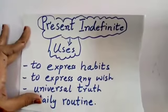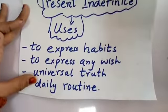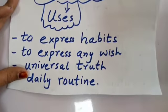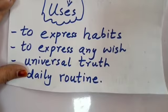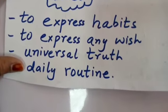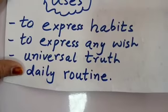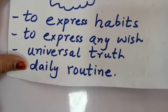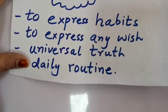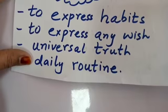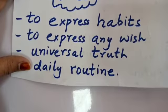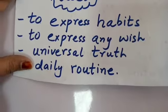The third use is to describe any universal truth — koi cheez jo hamesha se hoti aayi hai aur hamesha hoti rahegi. For example, the sun rises in the east and sets in the west. This is a universal truth — the action always happens — so for this we use present indefinite tense.